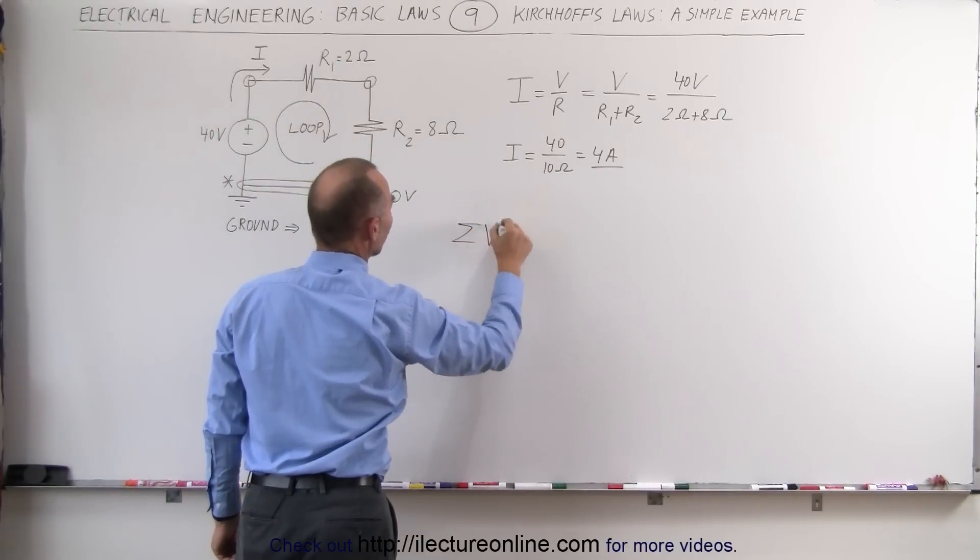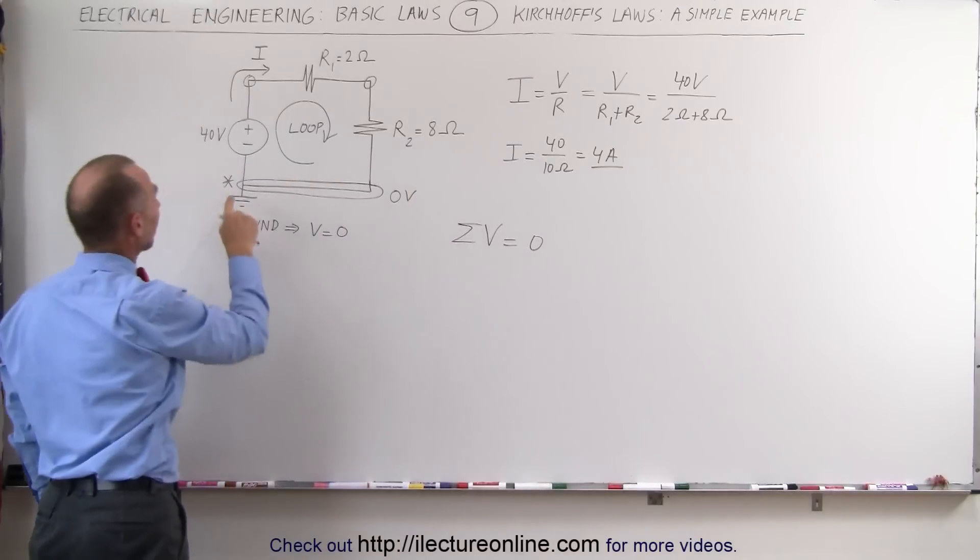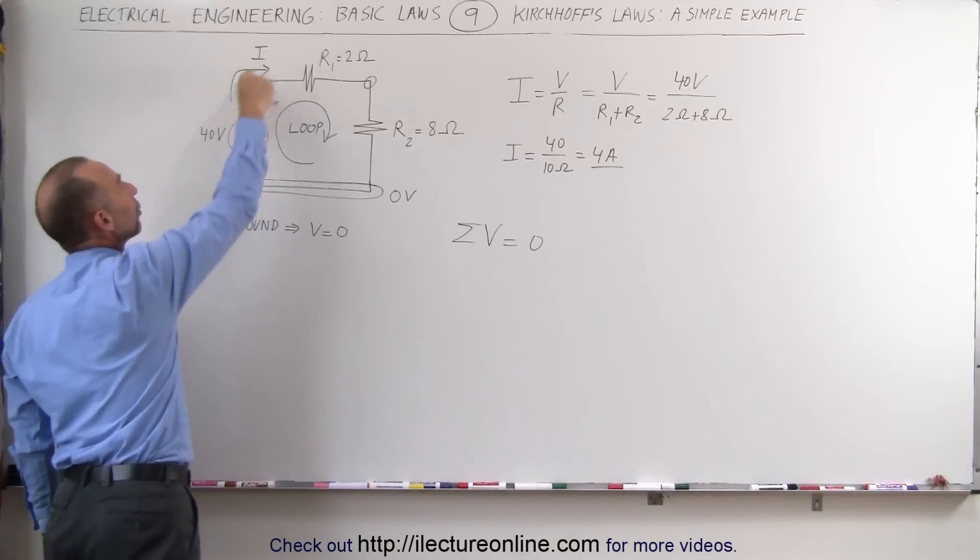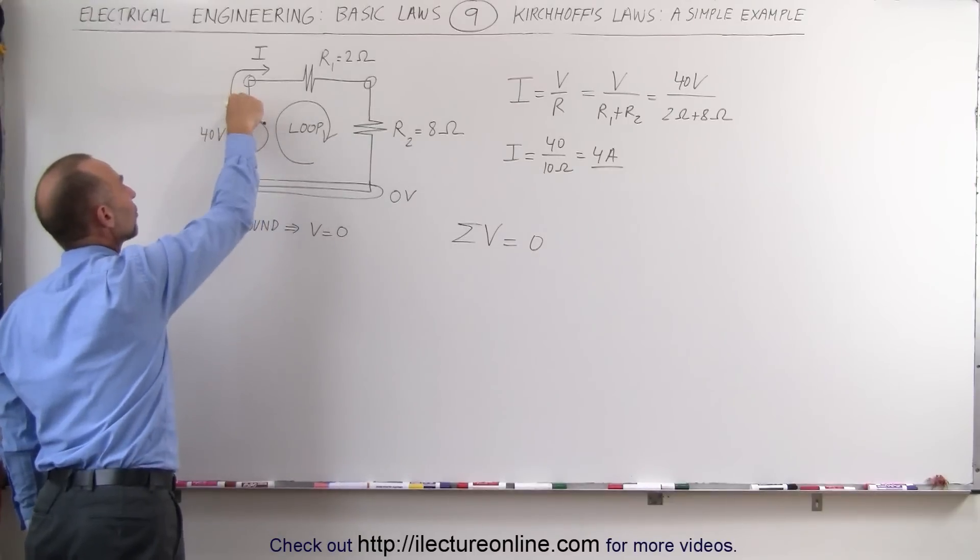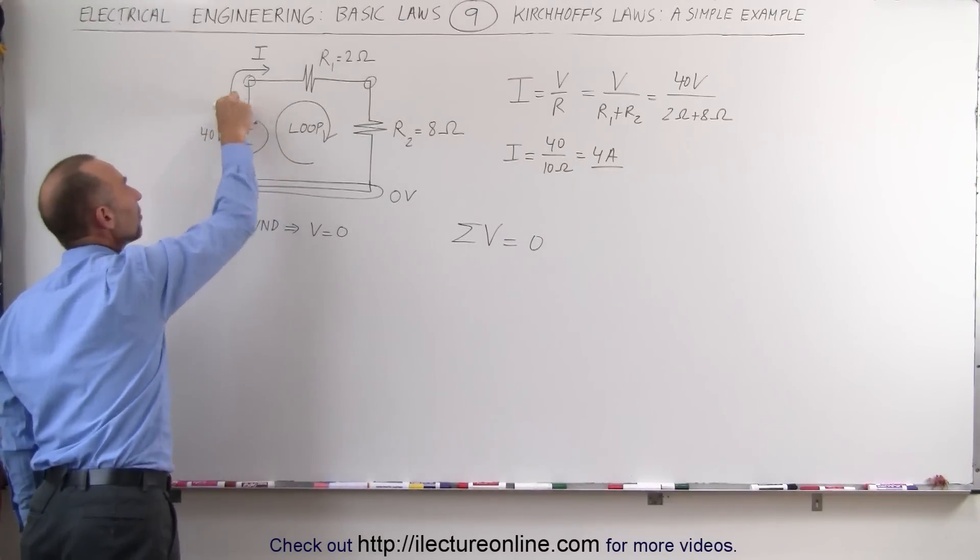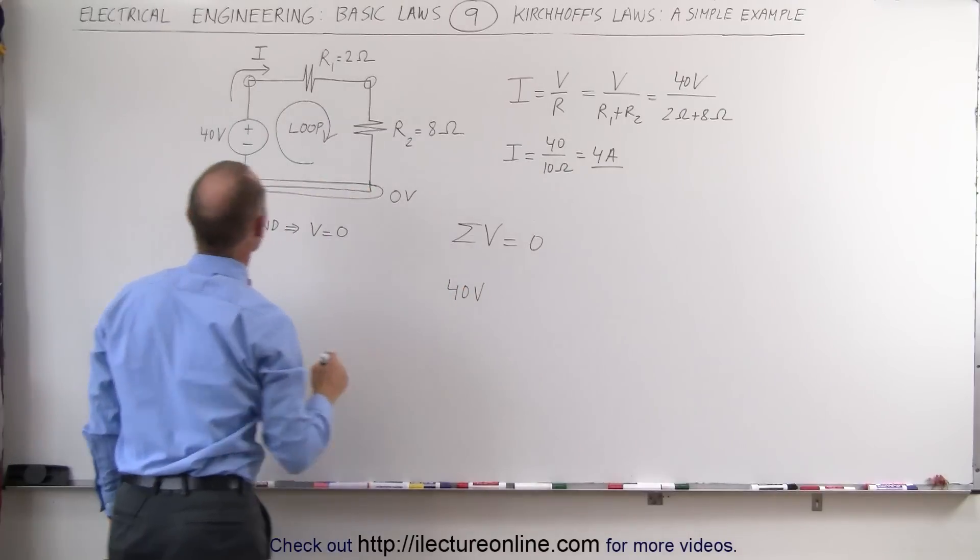But what we should show is that when we add up all the voltages going around the loop, they should add up to zero. Kirchhoff's Law says that the sum of all the voltages around any loop add up to zero. So let's go ahead and do that. Let's start from this node right here. Let's go around the loop in a clockwise direction. First, we go across the battery from the negative end to the positive end.